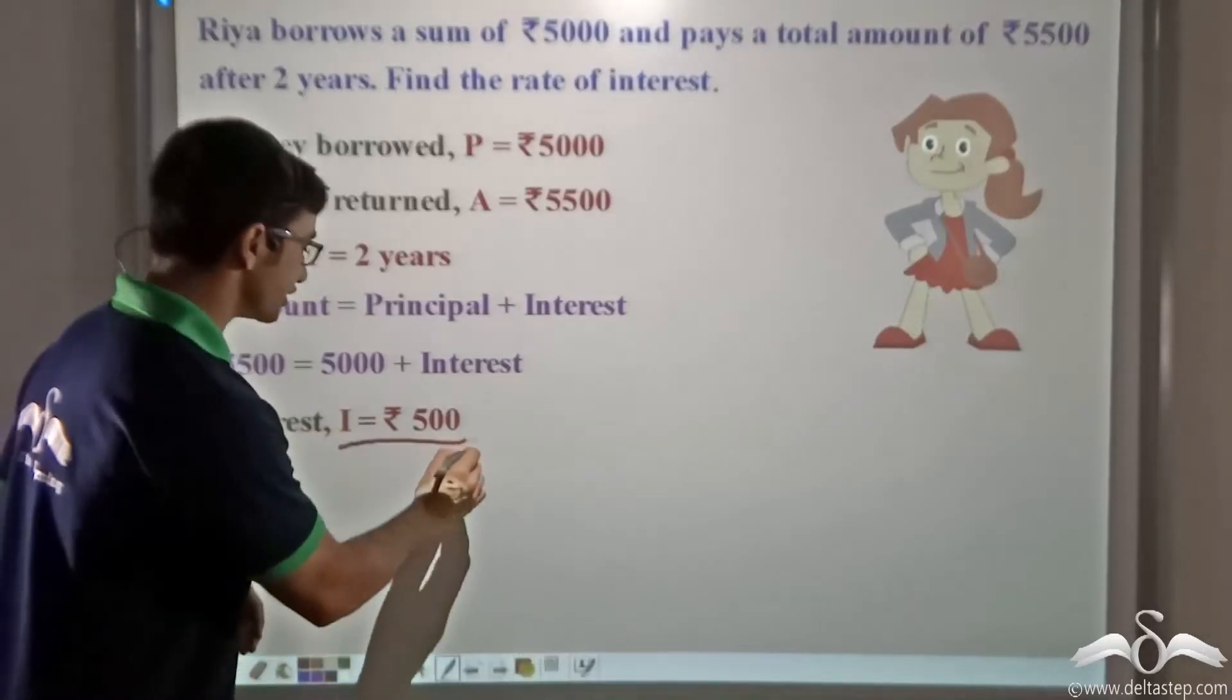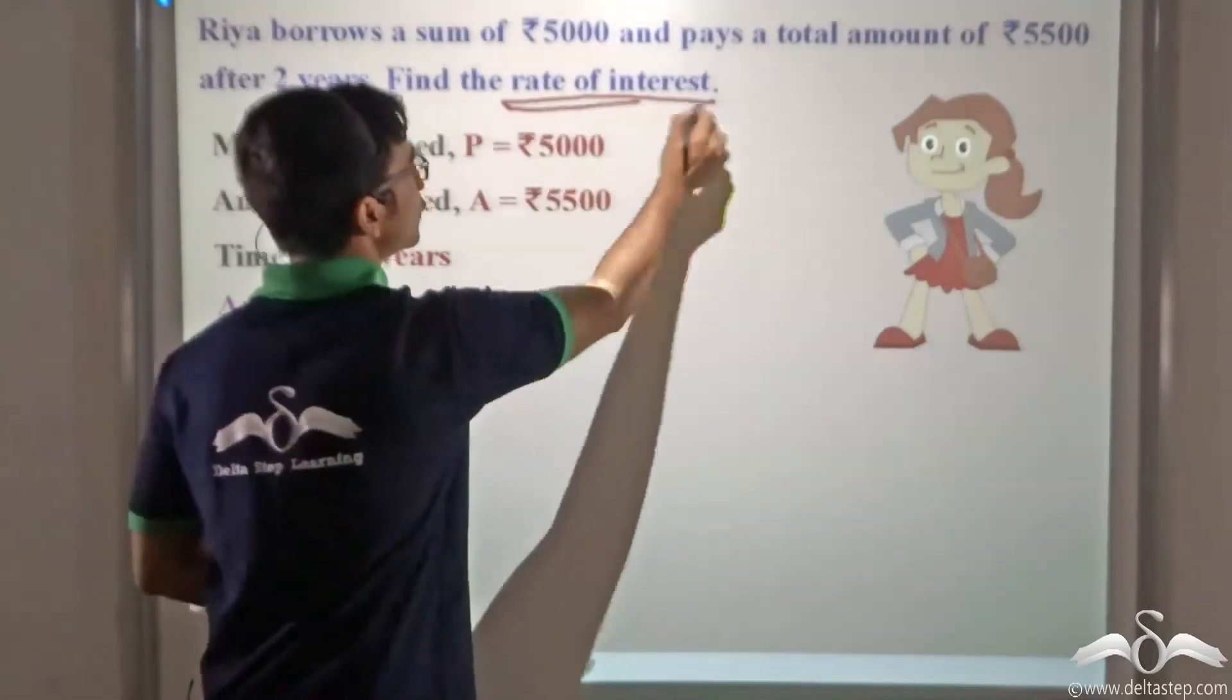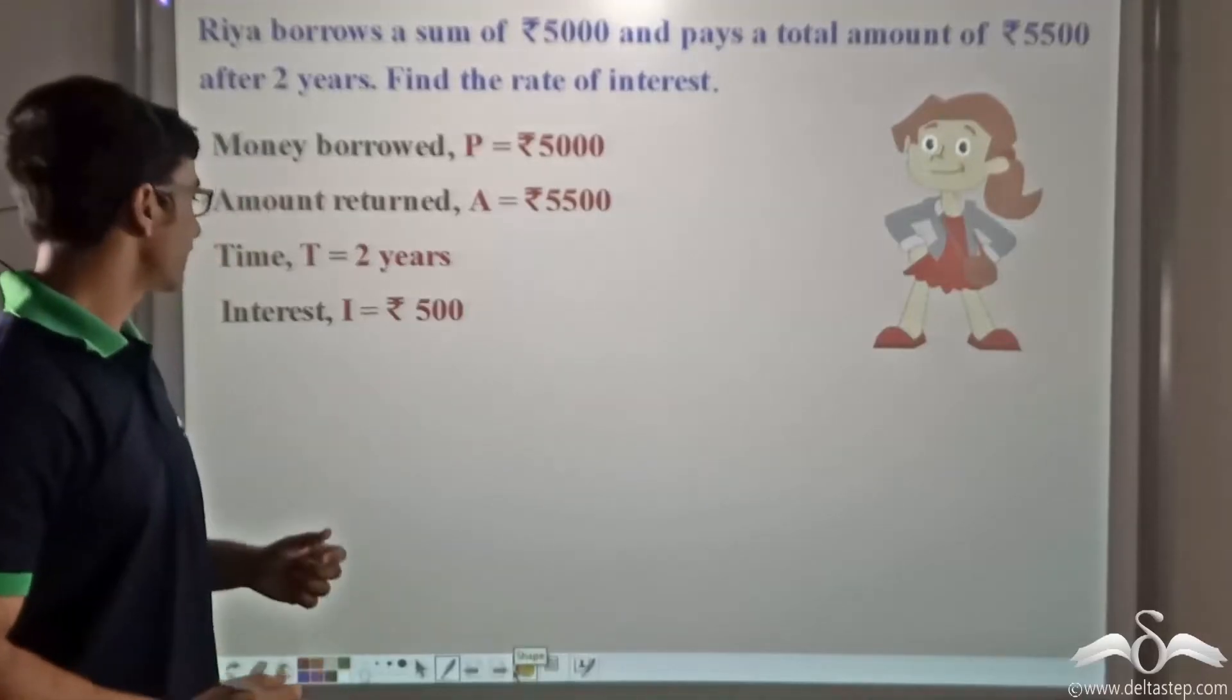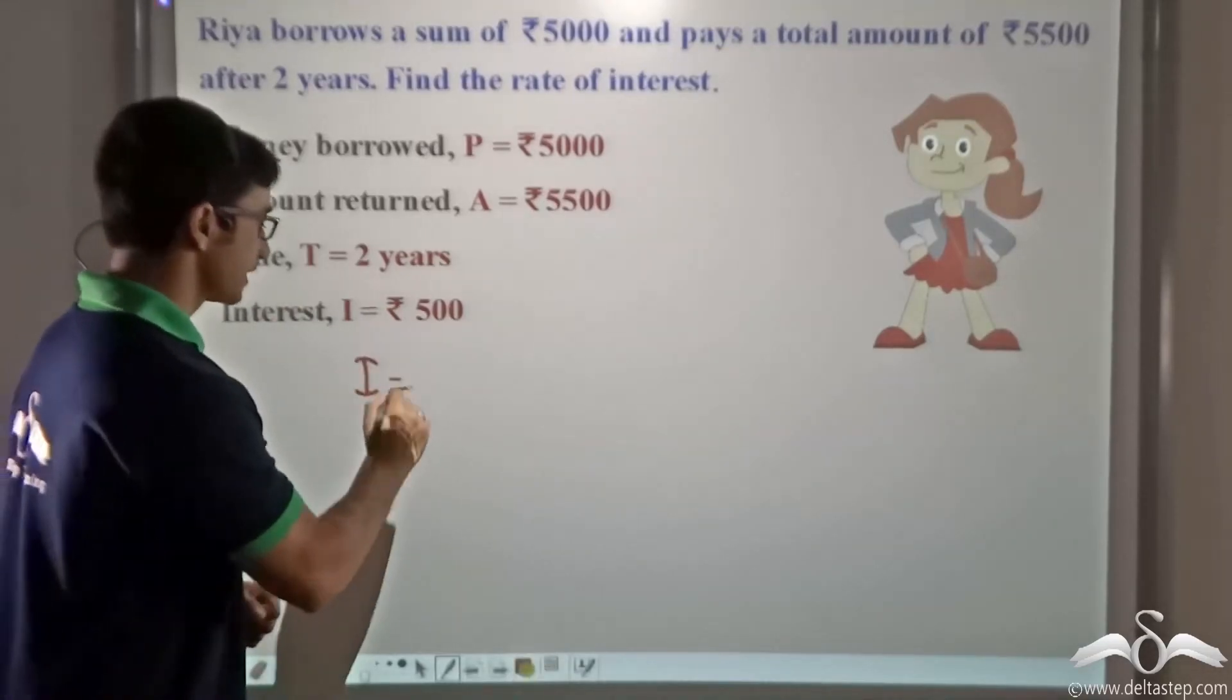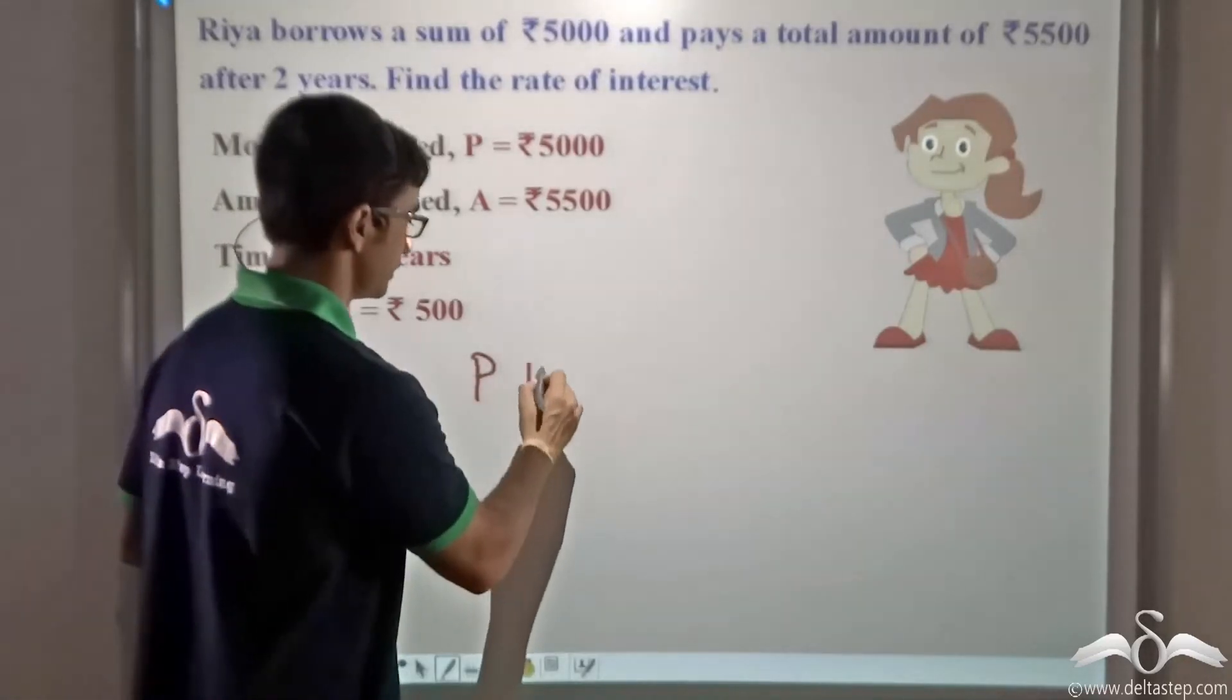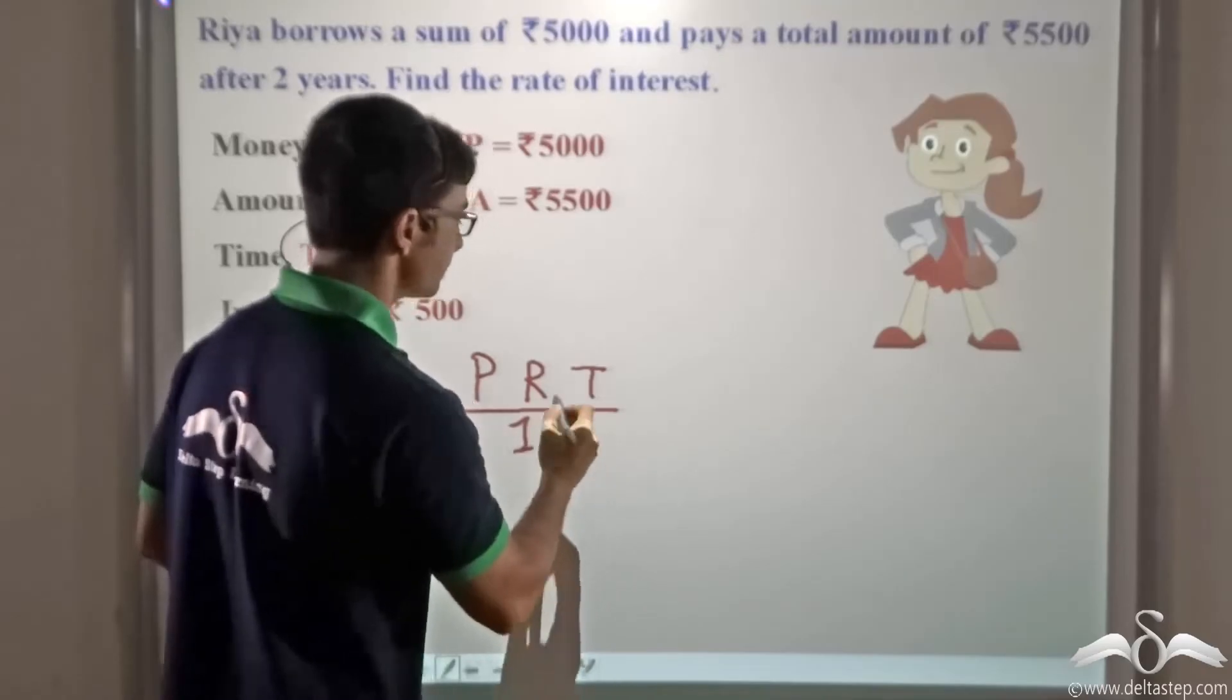Now that we have calculated the interest, let us proceed to calculate the rate of interest. So we have that interest is equal to Rs. 500. Now if you recall our previous discussion, you will remember that the formula for simple interest is P into R into T divided by 100.